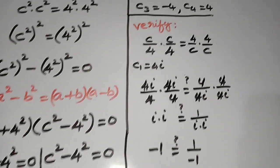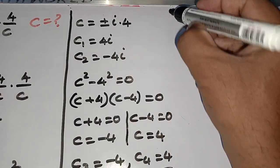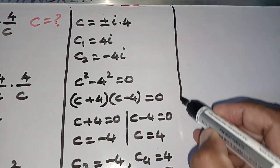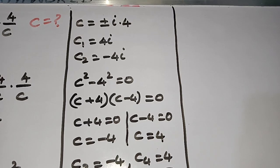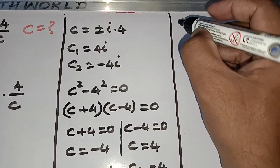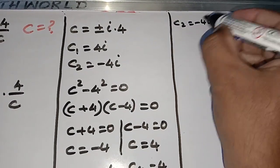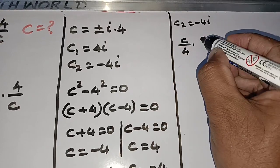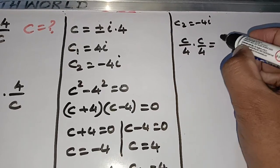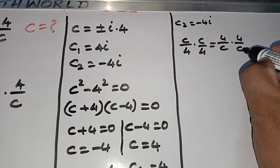Now taking c₂ = -4i, we check whether the right hand side equals the left hand side. Substituting into c/4 times c/4 equals 4/c times 4/c: (-4i)/4 times (-4i)/4 equals 4/(-4i) times 4/(-4i).